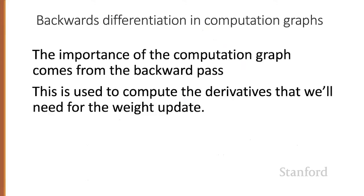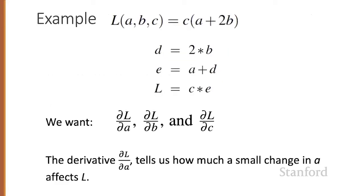The importance of the computation graph, however, comes from the all-important backward pass. The backward pass is used to compute the derivatives that we'll need for the weight update. In this example, our goal is to compute the derivative of the output function L with respect to each of the input variables: the derivative of L with respect to A, the derivative of L with respect to B, and the derivative of L with respect to C. The derivative of L with respect to A tells us how much a small change in A affects the final output L while holding all other variables constant.